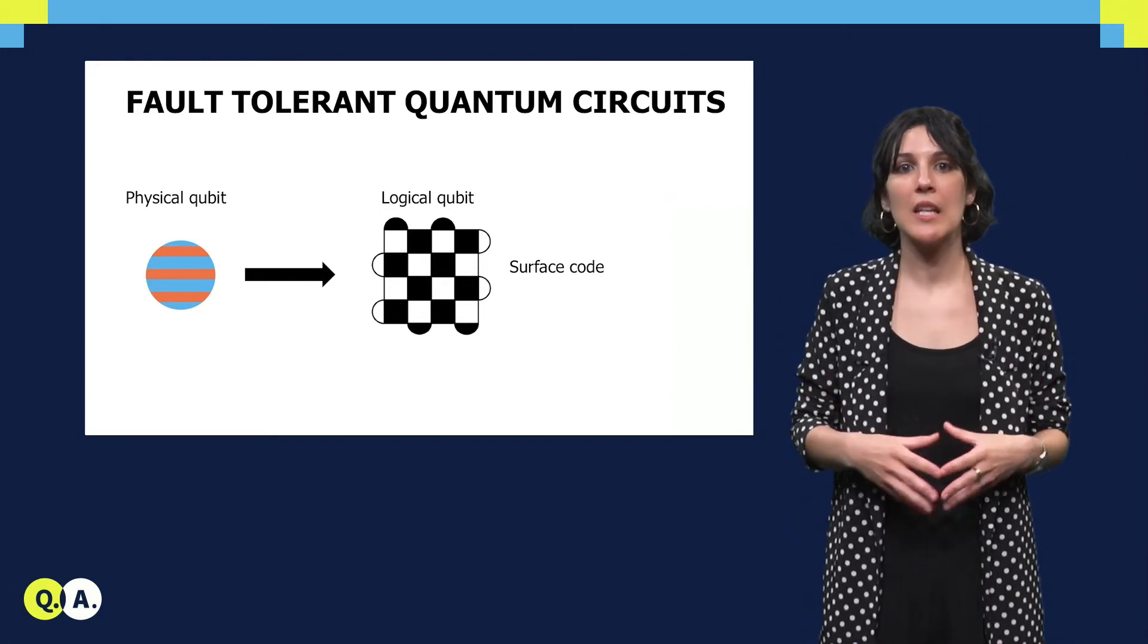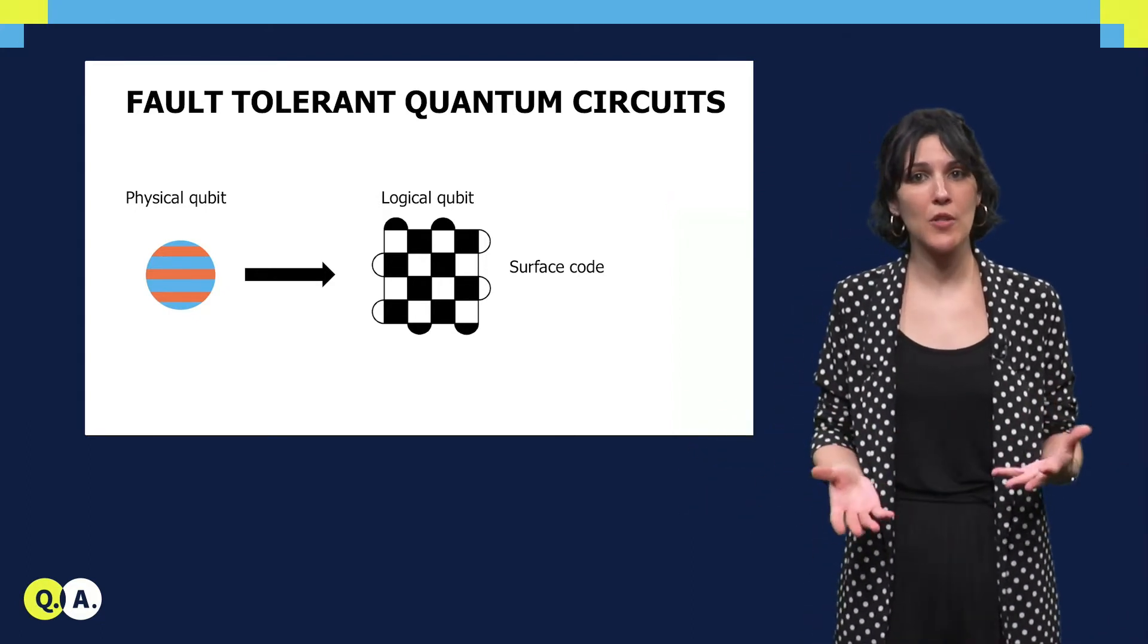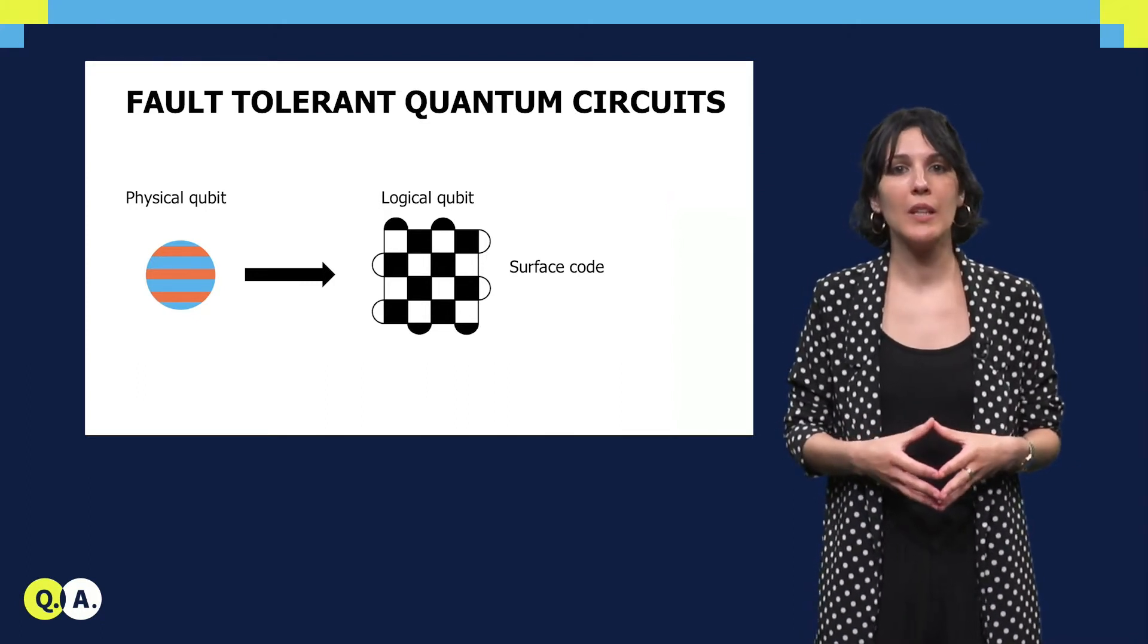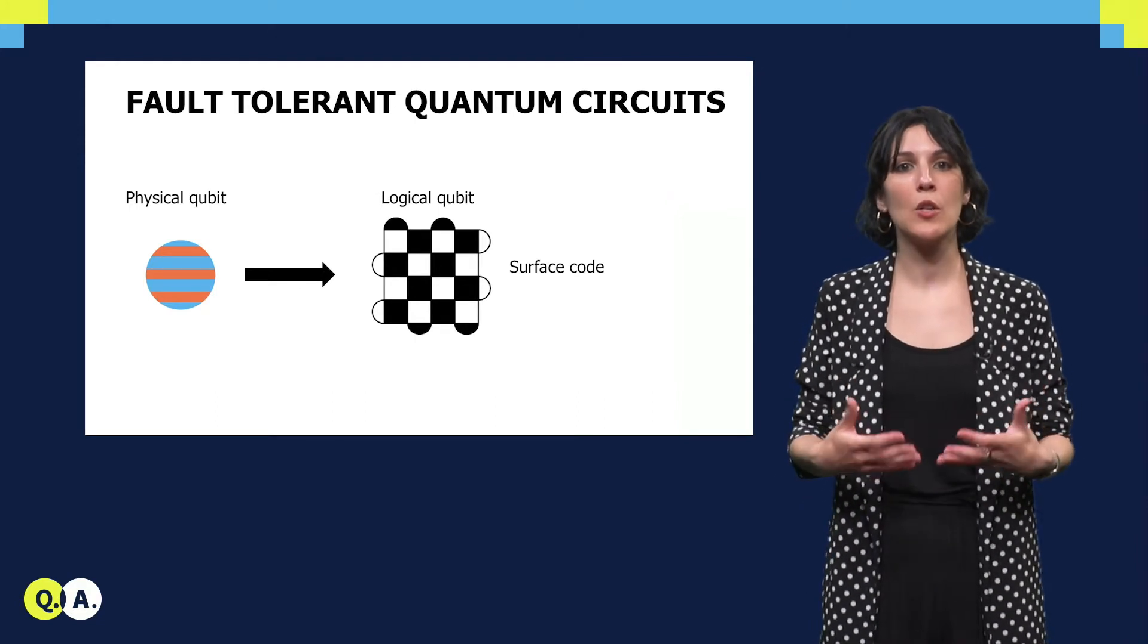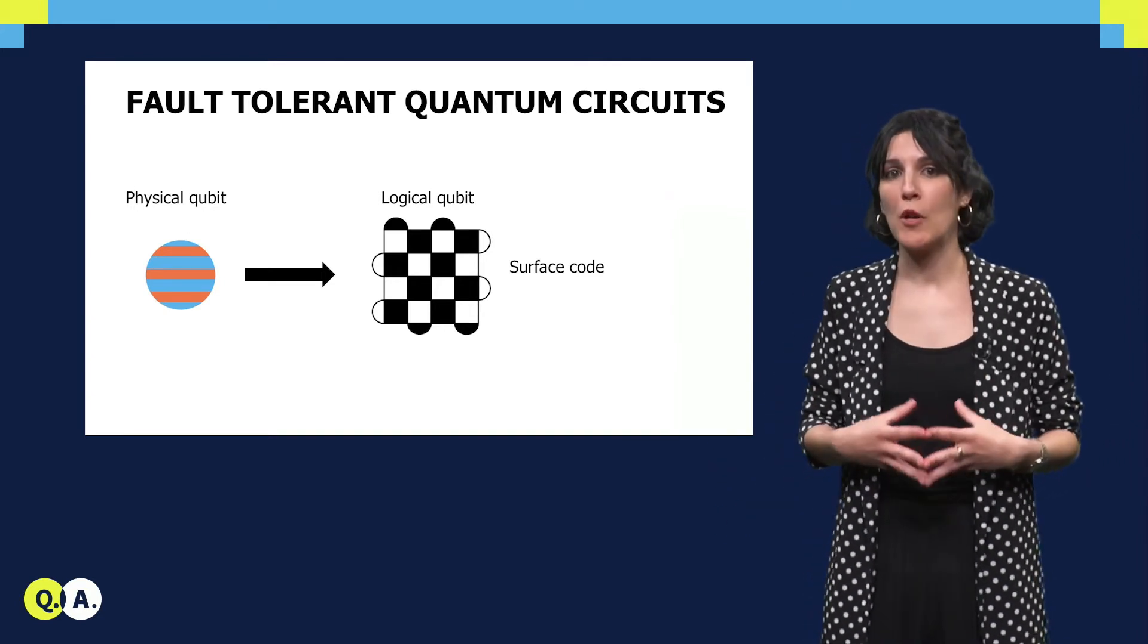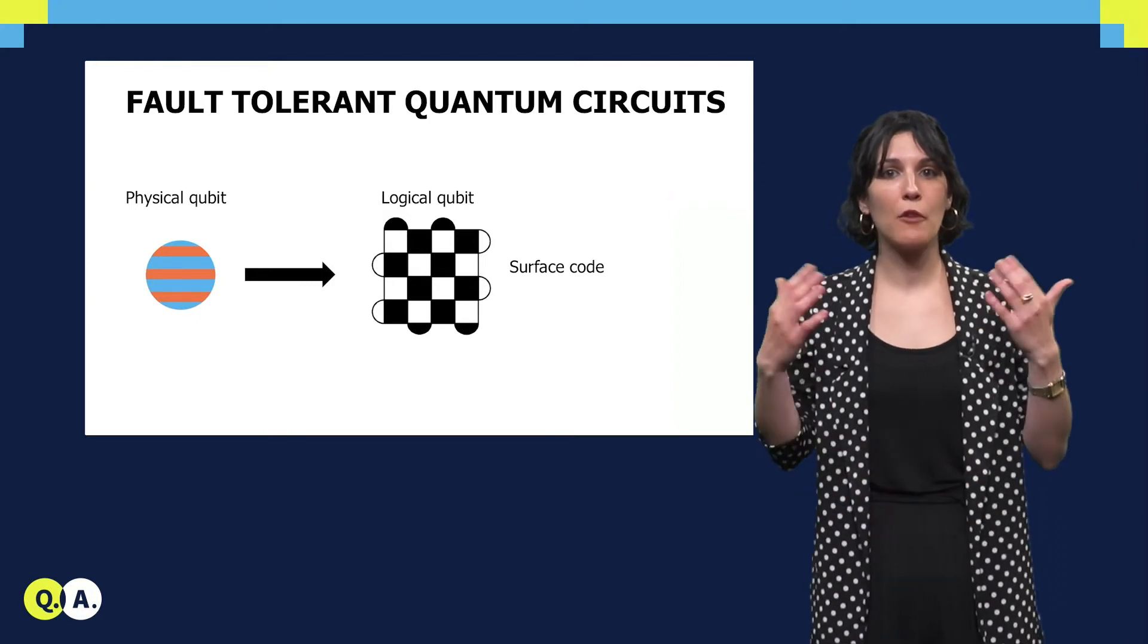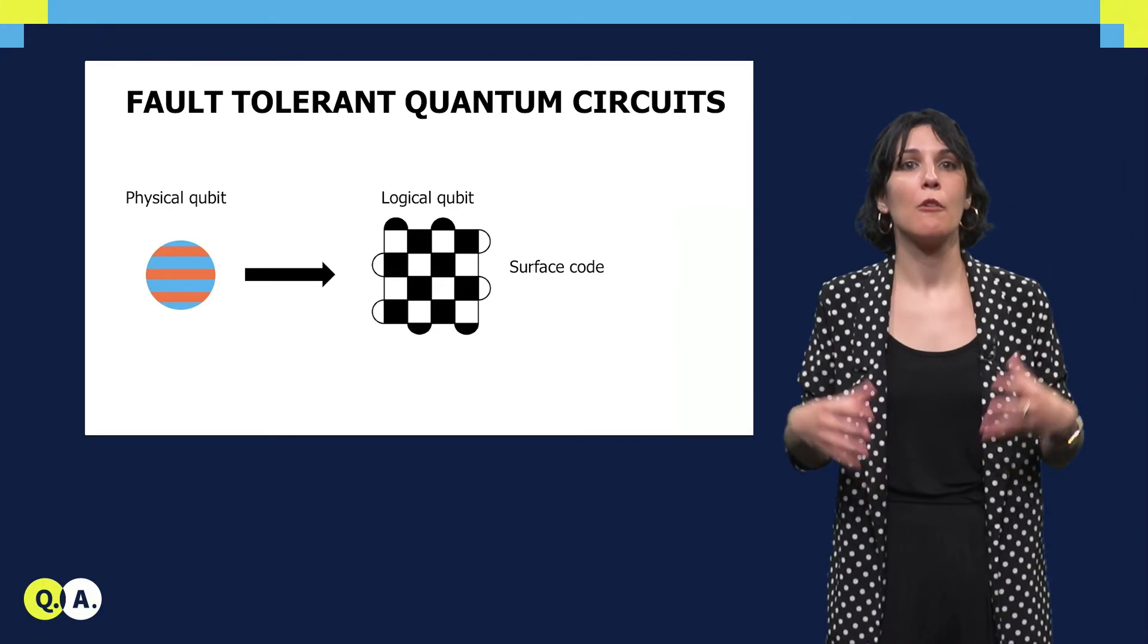A logical qubit is encoded into several physical qubits, and the system needs to be continually checked in order to detect and correct possible errors. The use of quantum error correction will substantially increase not only the number of qubits that you will need in your algorithm, but also the number of operations.